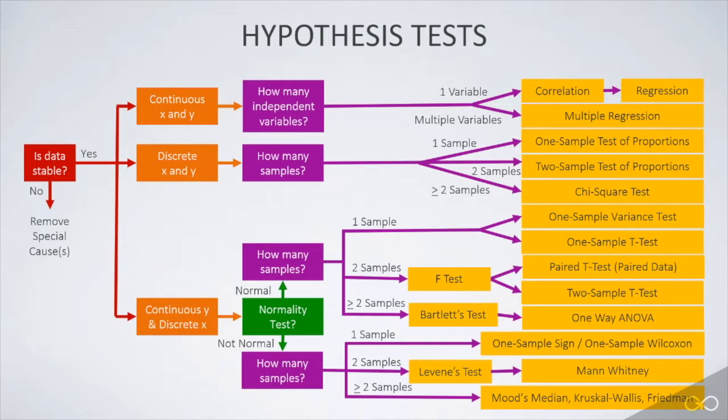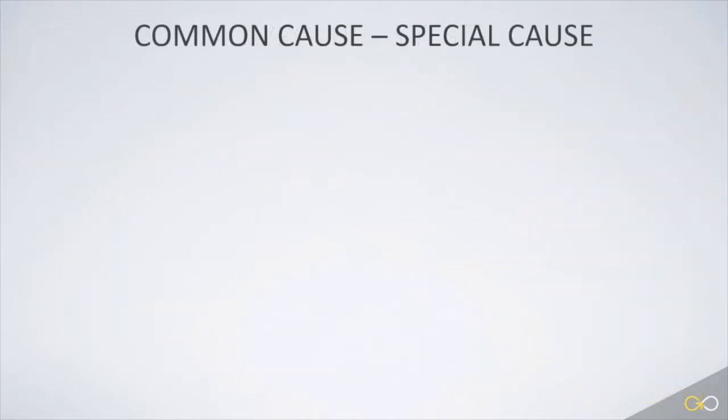We'll cover all of these tests in detail in the remaining lessons, but let's first consider a few of the preliminary questions that are in the front half of the decision tree. I'll start with common cause and special cause. We've discussed this in detail in other lessons and other parts of the Lean Six Sigma program, so here's a quick review.